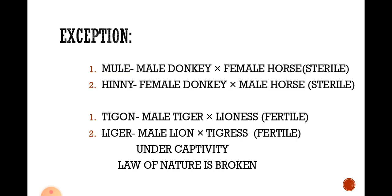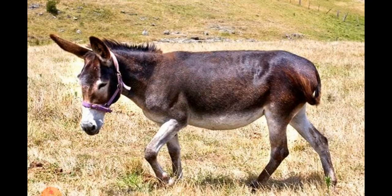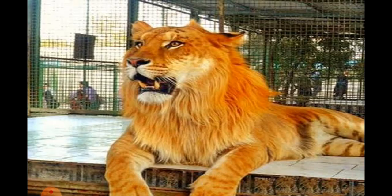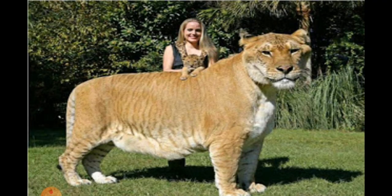Tigon is an organism born between a male tiger and a female lioness — it is a fertile organism. Liger is born between a male lion and a female tigress — it is also fertile. But why are they exceptions? Because these organisms do not breed in nature; they only breed under human captivity, so we are breaking the law of nature, and hence they are also not considered a species. Here we can see a mule, a hinnies, a tigon, and a liger.